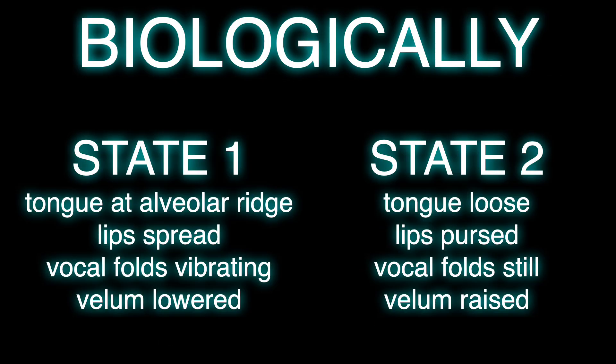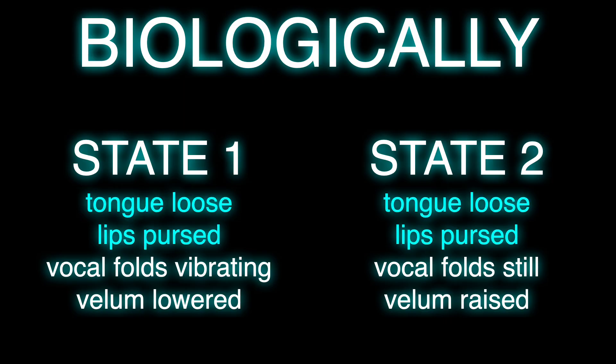Biologically, you can look at it this way. The various organs in your mouth and throat are in different states. In state one, the tongue is at the alveolar ridge to form the N, the lips are spread, the vocal folds are vibrating, and the velum is lowered, allowing air to pass through your nose. In state two, for the P, the tongue is loose, the lips are pursed, the vocal folds are still, and the velum is raised. So the articulation is anticipating state two, making some things more similar — the tongue becomes loose and the lips are pursed — and that gives you an M instead of an N.